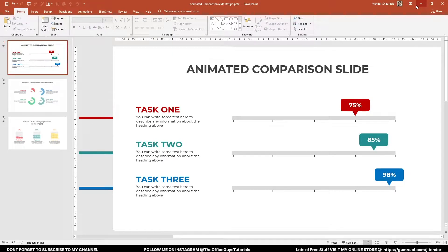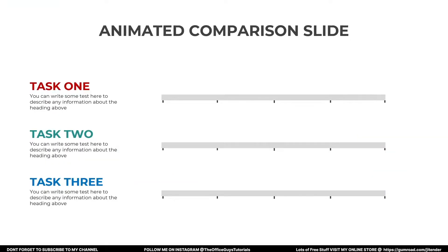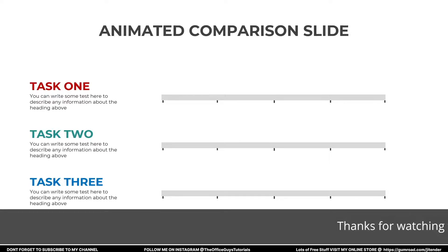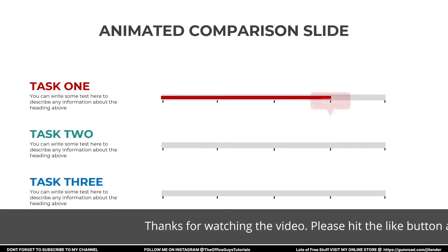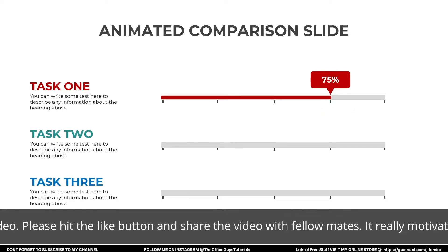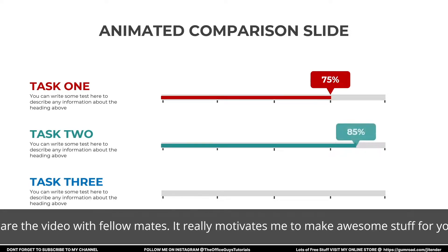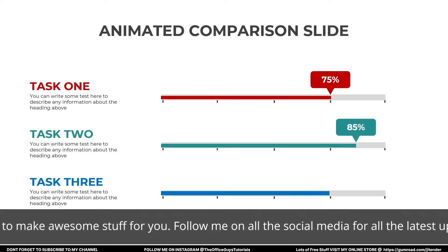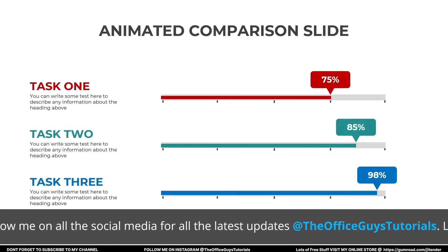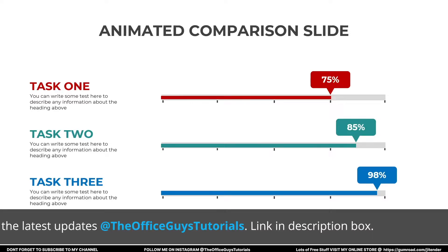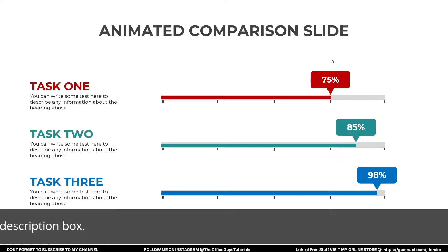Hey guys, I'm Chitinder Chulus here, welcome to my channel The Office Guys Tutorials. In today's tutorial I'm going to show you how to create an animated comparison slide just like this. Here I'm comparing three tasks — Task 1, Task 2, and Task 3. When you press the arrow key, Task 1 is completed by 75%, Task 2 by 85%, and Task 3 by 98%.